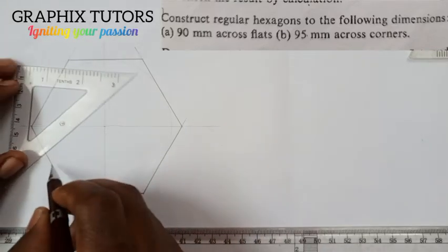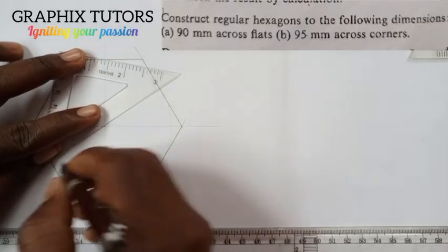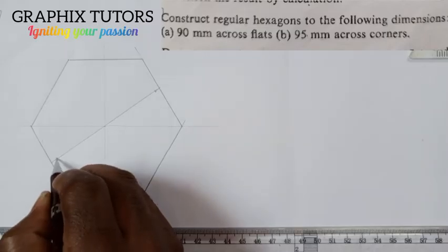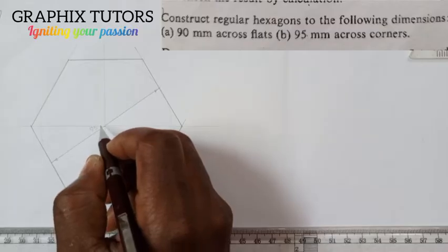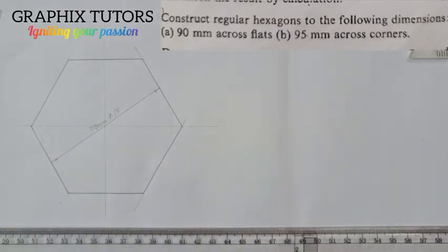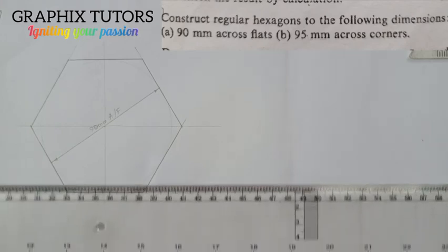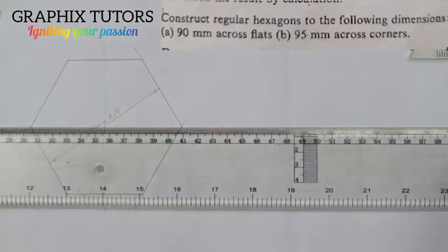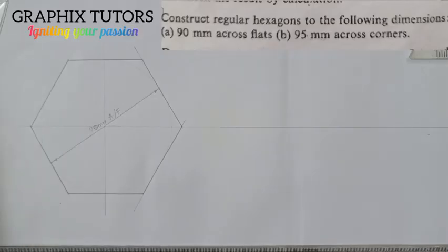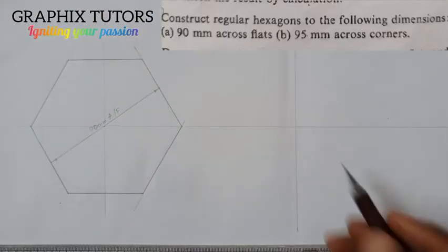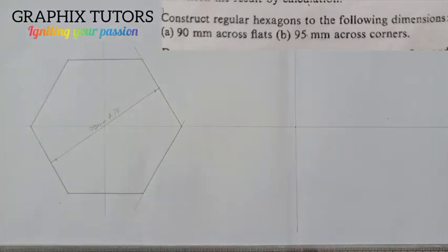In the other aspect, we are to draw 95 millimeters across corners. The distinction here is that from one side to the other side is 95 millimeters. So what you do is draw your lines the same way and get the center where they meet.